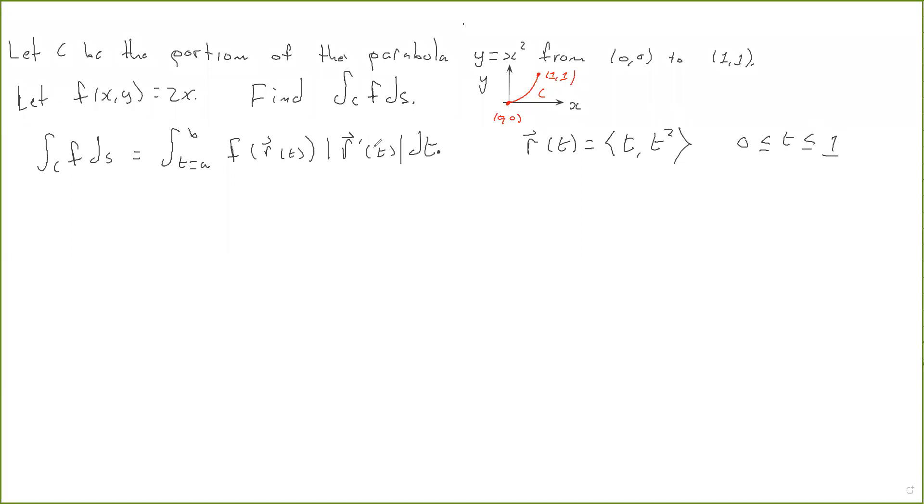Okay? So if you look over here at this formula, we need to know what r prime of t is. So let's compute r prime of t. r prime of t is (1, 2t). And so this says that the magnitude of r prime of t is going to be equal to the square root of 1 plus 4t squared. Okay? So now we just plug stuff in to this integral over here.